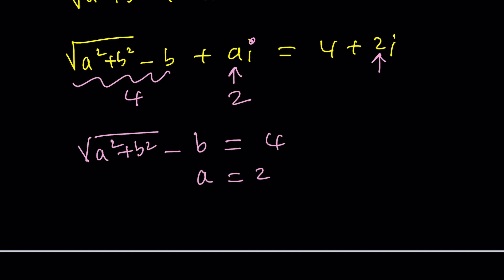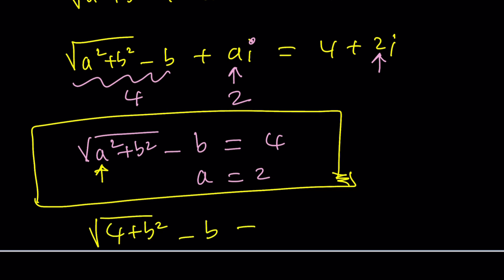Now we're going to solve this system. How do we solve this system? Easy. Because the second equation gives us the value of a, we can plug it in. Let's go ahead and plug it in. We get square root of a squared which is 4 plus b squared minus b equals 4.